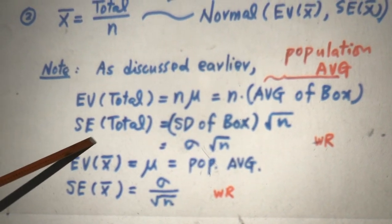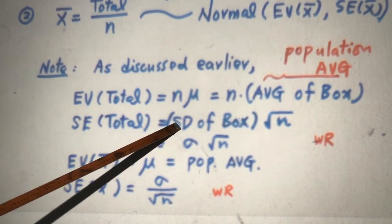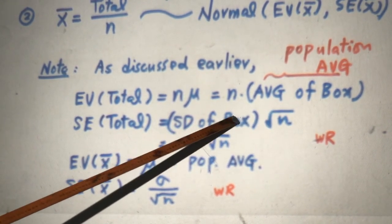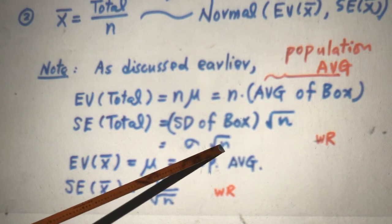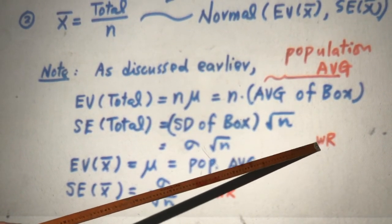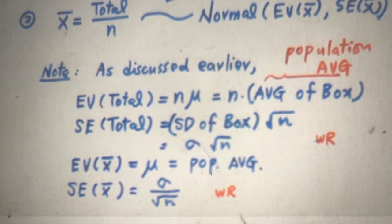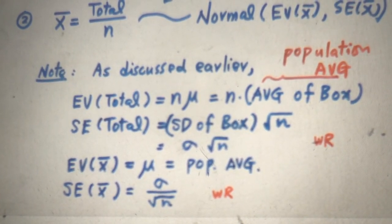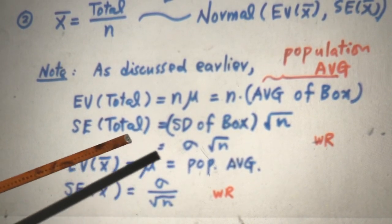And SE sample total is standard deviation of the box times square root of N. Standard deviation of the box is sigma times square root of N. This is a case where it's with replacement. Without replacement, you need to consider finite population correction factor. That's what I just covered.